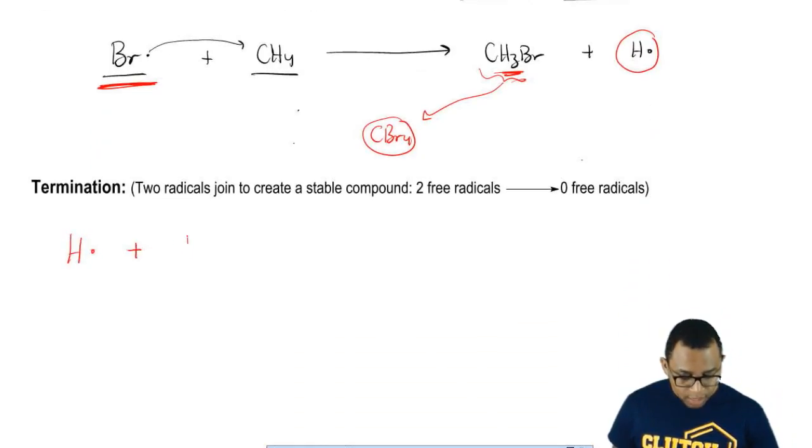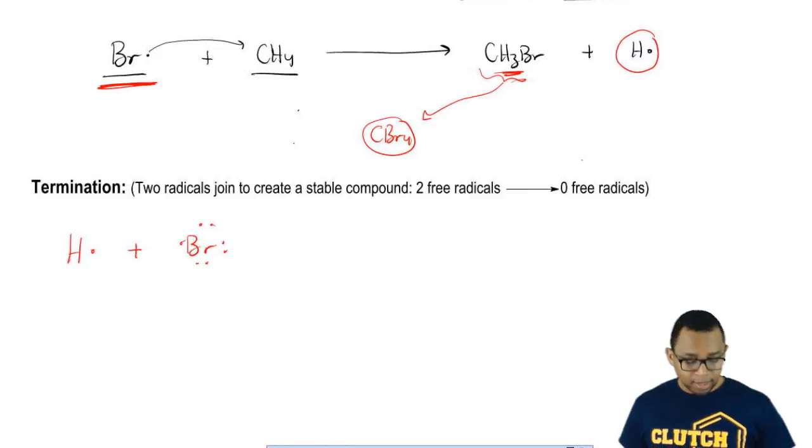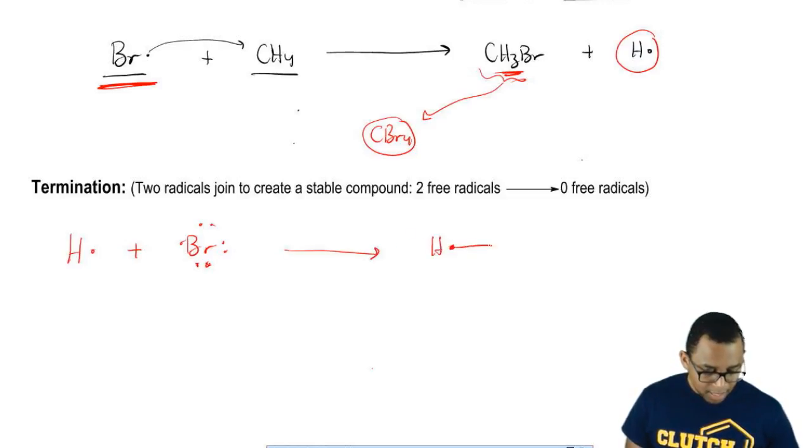You have two radicals here, each with one unpaired electron that desperately needs to be paired up. What do they do? They just meet up and have their electrons form a bond to one another. Now they're stable.